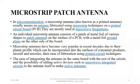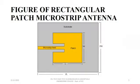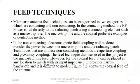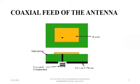A microstrip antenna is an antenna fabricated on a PCB and is mostly used at microwave frequencies. An individual microstrip antenna consists of a patch of metal foil of various shapes on one side with a metal foil ground plane on the other side. Due to the thin planar profile and ease of fabrication using printed circuit techniques, these microstrip antennas have become very popular in recent decades. This is the visual image of a rectangular patch microstrip antenna. Microstrip antenna feed techniques can be categorized into two types. In our project we use microstrip line feed, and the image represents the feed technique used here.